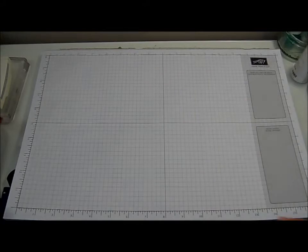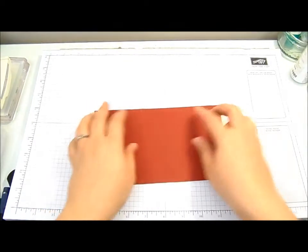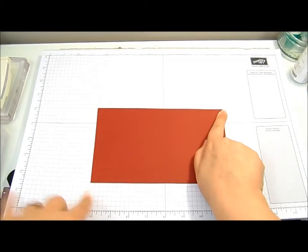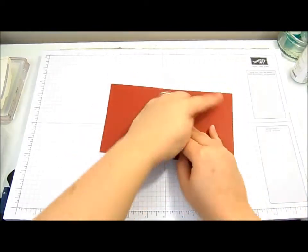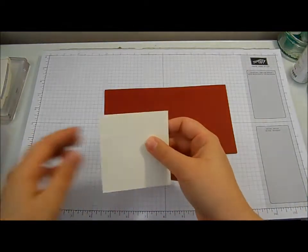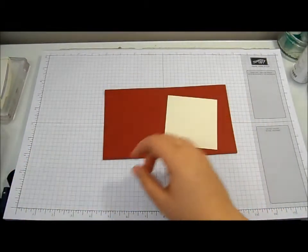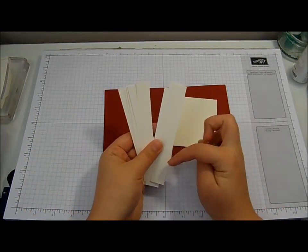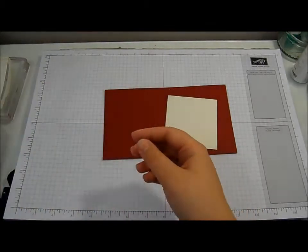I've got a piece of cherry cobbler cardstock which measures 8 inches by 4.5, and all the metric measurements will be on my blog. Then I've got a piece of very vanilla that's 3.5 by 3.25, and then 10 strips which measure 5 inches by 3.25 of an inch across.